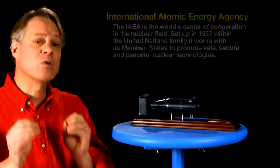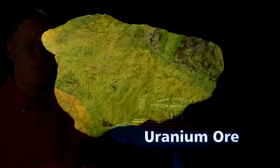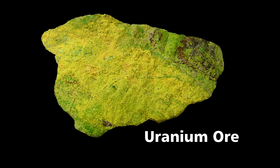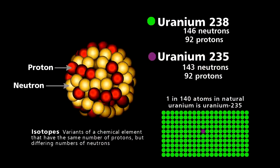The key problem? Separating two nearly identical variants of the element uranium. Natural uranium occurs as a metal ore, and it contains primarily two isotopes. Most uranium is U-238.